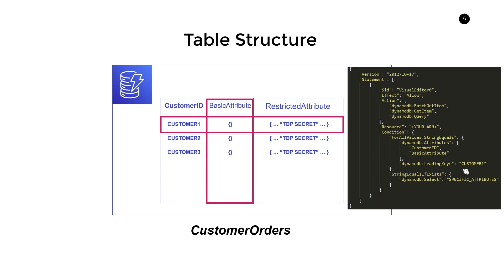You may ask: we're hard-coding customer one — what if we want to write one policy and reuse it for customer one, customer two, customer three, through customer N? It turns out there's an easy way using dynamic properties you can inject into your IAM policy. Let me show you an interesting example of using dynamic attributes as part of your policy to inject values at runtime and achieve really cool functionality.